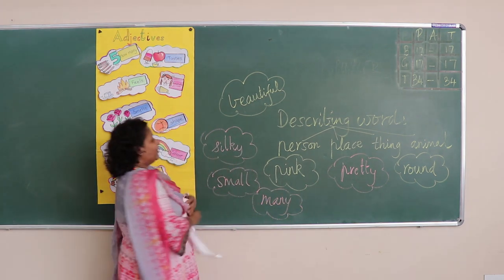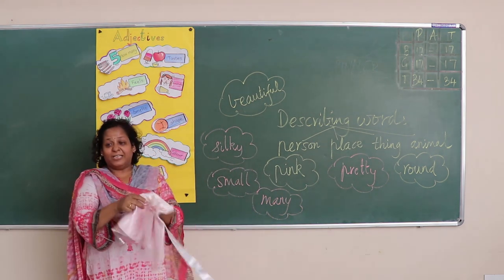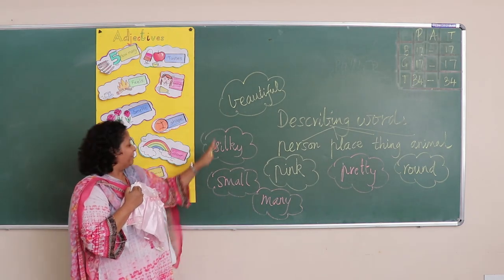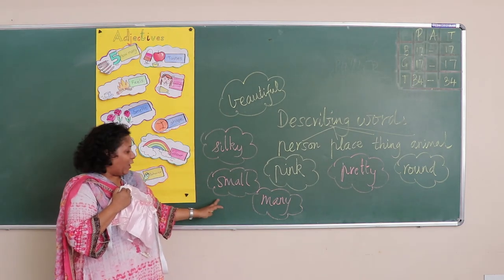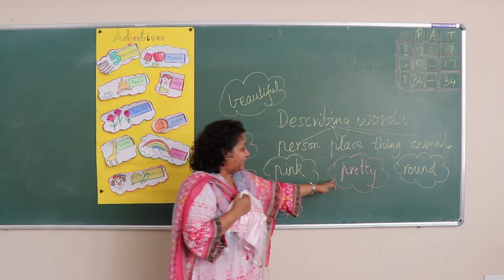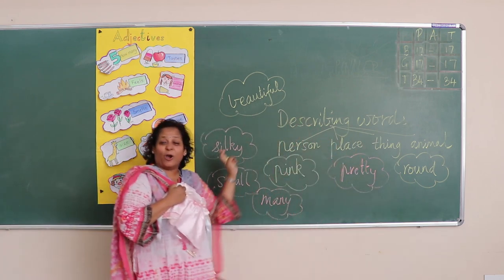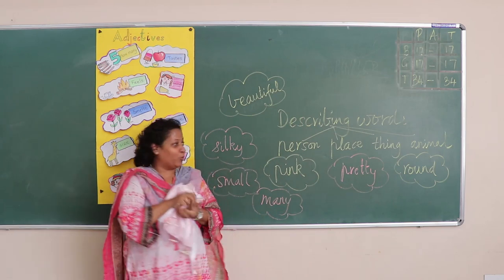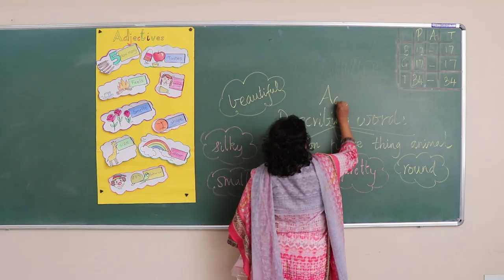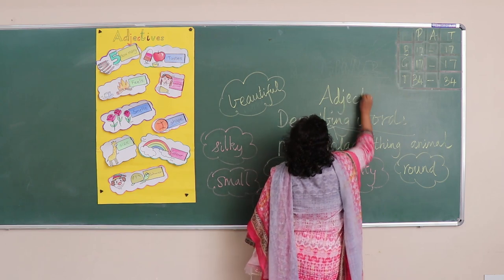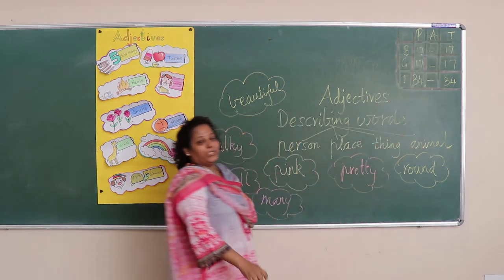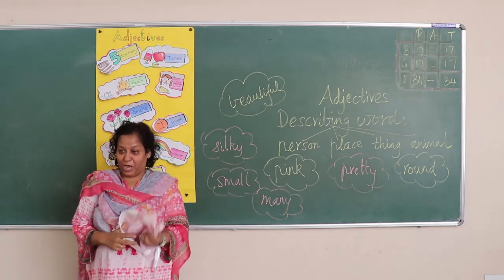So these describing words are: beautiful, silky, small, many, pink, pretty, round. These are called adjectives. So adjectives tell about a noun or a pronoun.